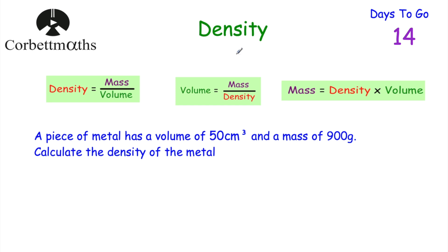Just like speed, where we considered how many miles per hour, you can learn the formula: density is equal to the mass of an object divided by its volume. You can rearrange this so that volume is equal to mass divided by density, and mass is equal to density multiplied by volume. Those are all very useful.